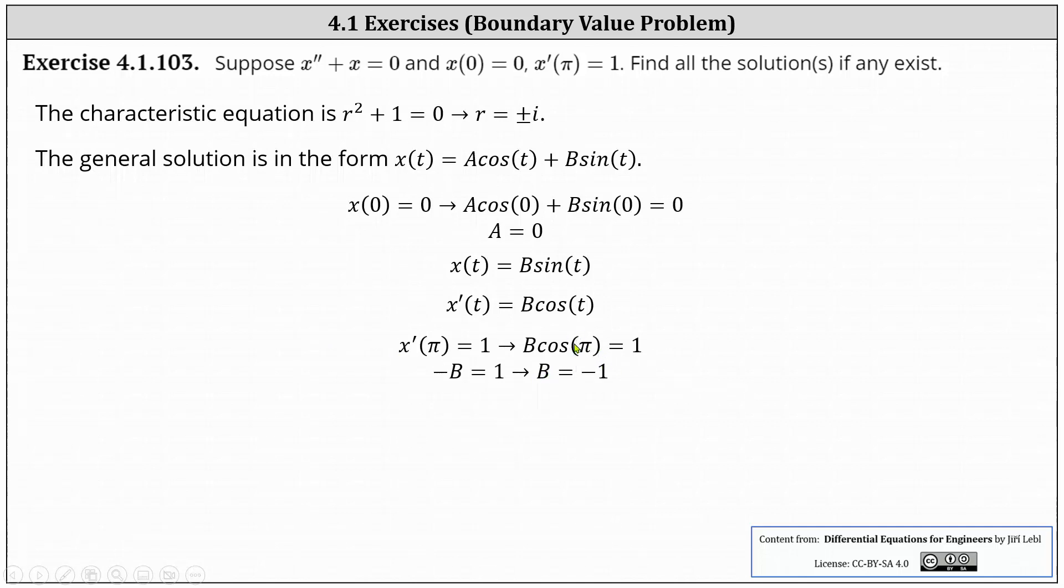This gives us b cosine pi equals one, and cosine pi is equal to negative one. The equation simplifies to negative b equals one, and therefore b equals negative one. This indicates there's only one solution to the boundary value problem, which is x of t equals negative one sine t, or x of t equals negative sine t.